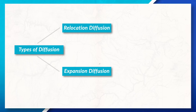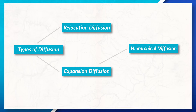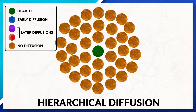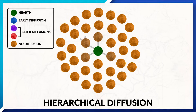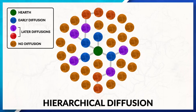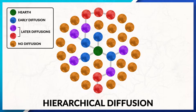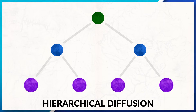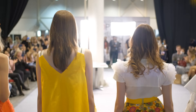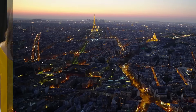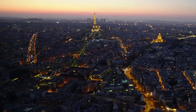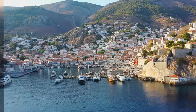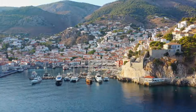Expansion diffusion can be broken down into different types. The first type is hierarchical diffusion. This type of diffusion often happens through systems, typically from some sort of power, and the trait will spread from a top-down approach. For example, fashion trends often start in global cities and diffuse to other major areas, and eventually make their way down to the smaller settlements.